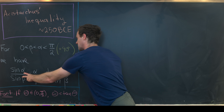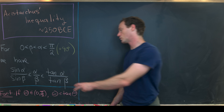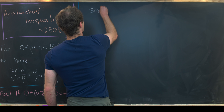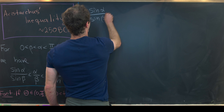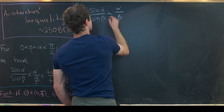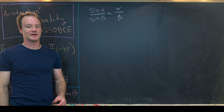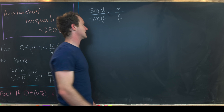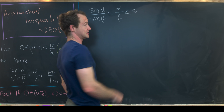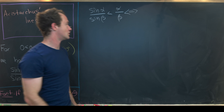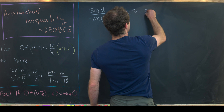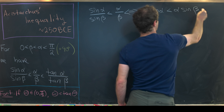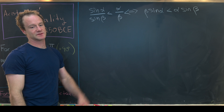We're going to focus on the left-hand part of the inequality first, then prove the right-hand part. The inequality sine(alpha) over sine(beta) less than alpha over beta is equivalent, by cross-multiplying, to beta times sine(alpha) is less than alpha times sine(beta).